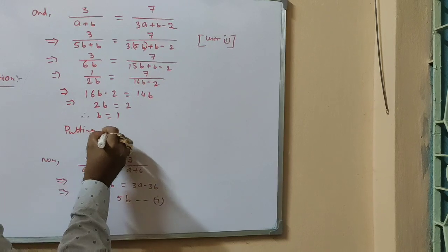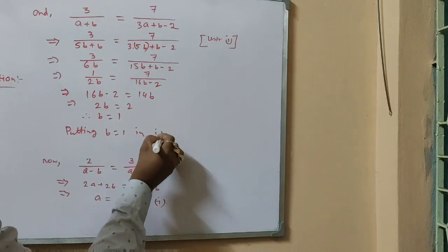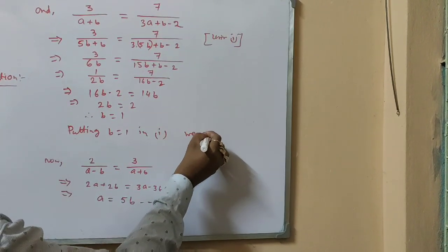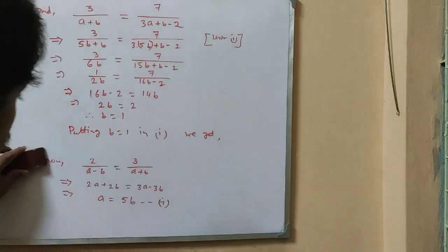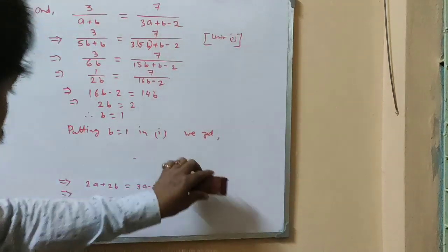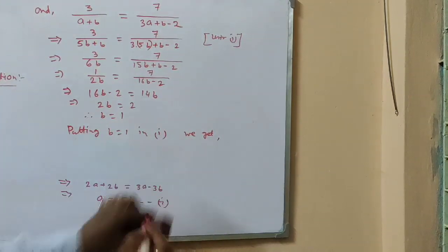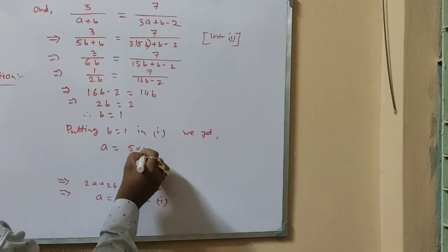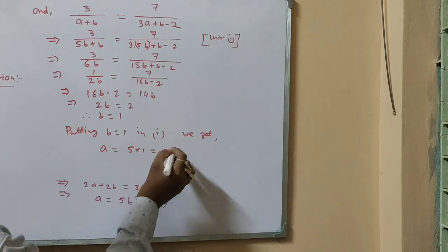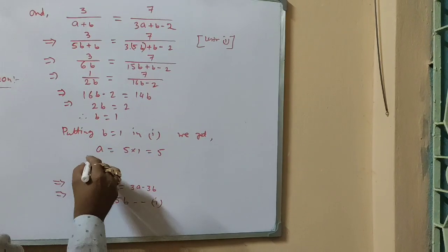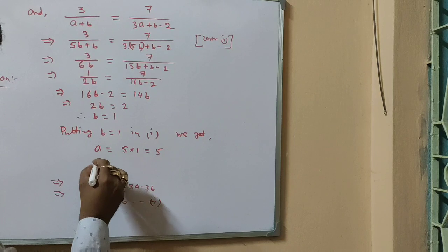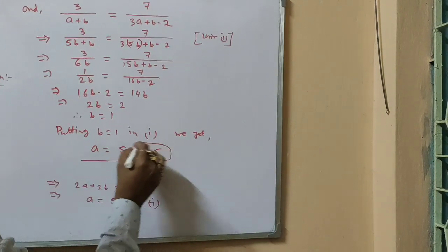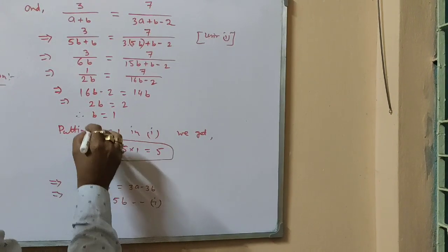Putting b equal to 1 in equation 1, we get a equal to 5 into 1 equal to 5. The required values of a and b are 5 and 1 respectively.